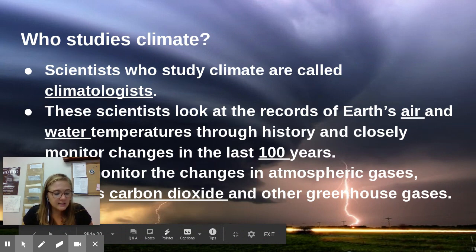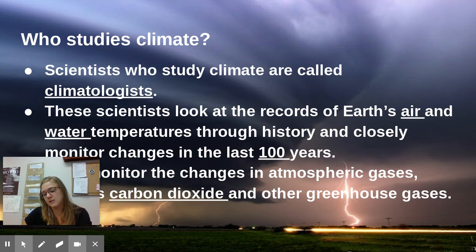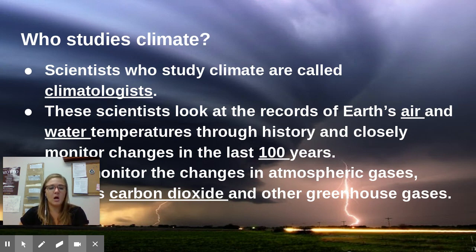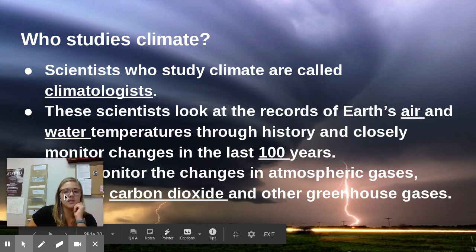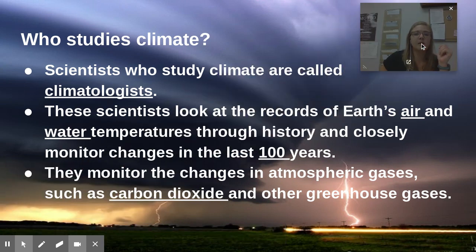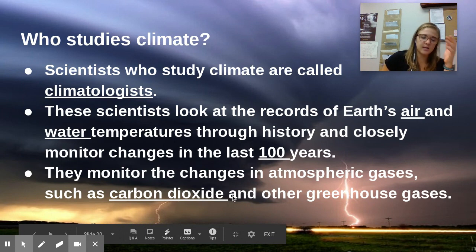In our last section, scientists who study climate are called climatologists. Most scientists who are experts at something have a type of name ending in '-ist,' like a biologist or an optometrist or a kinesiologist. What climatologists do is look at records of Earth's air and water temperatures throughout history, and they closely monitor major changes in the last 100 years — such as whether atmospheric gases have changed, whether there's more carbon dioxide in an area than before, what effects that will cause, and what can be done to help. These are the scientists who closely watch the ozone layer.